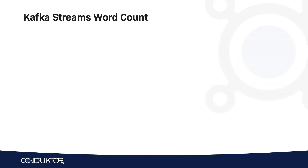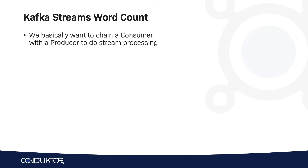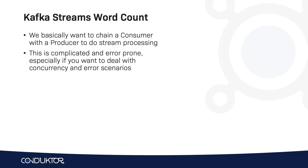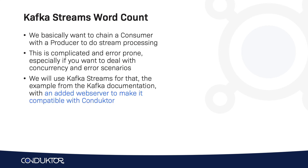For our example, we're going to do a word count in Kafka Streams. We want to chain a consumer with a producer to do some stream processing. This could be very complicated if we have to write our own consumer and our own producer, because you have to deal with concurrency, error scenarios, and scaling. For this, we will use the higher-level library called Kafka Streams, which is very easy to reuse and write.